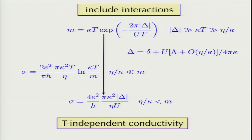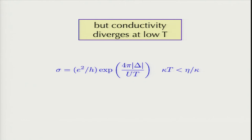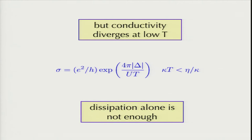But not so fast — because we didn't really set the temperature to zero. If we now let the temperature be the smallest of these parameters, the conductivity diverges exponentially. Hence, this also is not the answer. Dissipation alone is not enough. If you just solve that standard model with mod omega for bosons, you don't end up with anything other than two phases: an insulator and a superconductor.